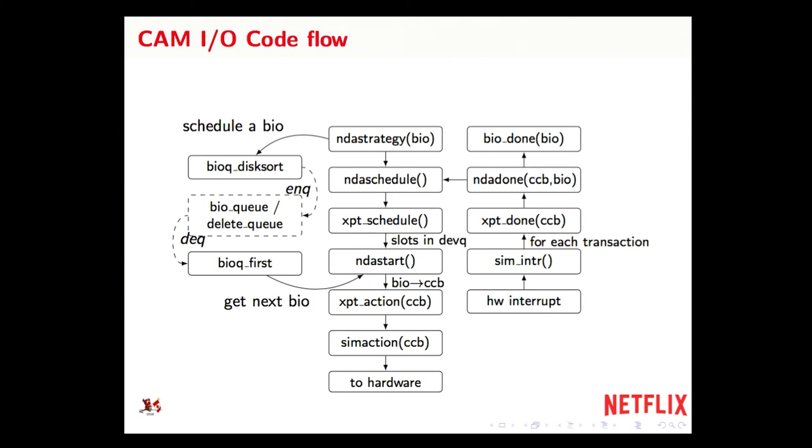Here's kind of a picture of everything that I've been talking about. An IO comes in at the top into NDA strategy. It queues the bio to the disk queue and calls NDA schedule. NDA schedule is a wrapper around XPT schedule. If there are slots in the dev queue, XPT schedule calls NDA start, which then calls bio queue first to get the bio off of the queue. The bio to CCB translation happens here as we pass it down. And then it goes all the way down into hardware and comes back up, and we get back to our done routine.